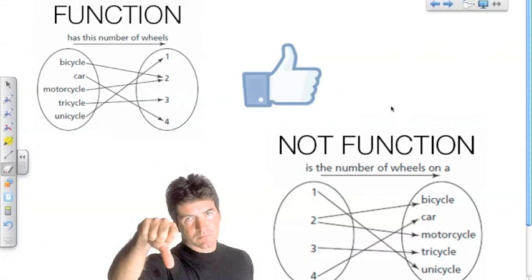Yesterday we talked about functions, and functions being a special type of relation. They relate data in a special kind of way, and we said that a function is a relation where each element in the domain is only associated with one element in the range.